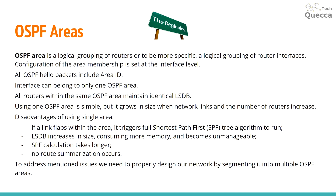All routers within the same OSPF area maintain an identical LSDB. Using one OSPF area is simple for configuring and maintaining, but it grows in size when network links and the number of routers increase. There are a few disadvantages of using a single area. First, if a link flops within the area it triggers the full Shortest Path First algorithm to run. Second, the LSDB increases in size, consuming more memory and becomes unmanageable. Third, SPF calculation takes longer — the more routers and links we have, the longer it takes. And finally, no route summarization occurs.